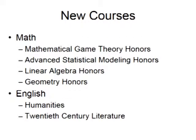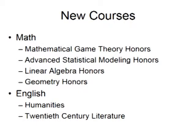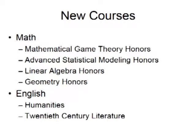In addition, in the Math Department we have Mathematical Game Theory Honors, Advanced Statistical Modeling Honors, Linear Algebra Honors, and Geometry Honors. In English, we're offering 20th Century Literature and Humanities. Humanities is an interesting course — it's a combination of English and Social Studies, and you can choose the type of credit you'd like. It's a full year course; you can elect to have English credit, Social Studies credit, or 2.5 credits of English and 2.5 credits of Social Studies. For more information about these courses, you can go to the Program of Studies where it's outlined.